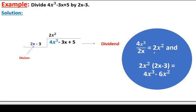Write down the quotient 2x² first, then multiply it by the divisor. The product of 2x² and 2x minus 3 is 4x³ minus 6x². This is subtracted from the existing dividend — don't forget to distribute the negative sign into both terms, so the terms will change their signs. 4x³ minus 4x³ is 0, and 6x² carries down, giving us 6x² minus 3x plus 5.